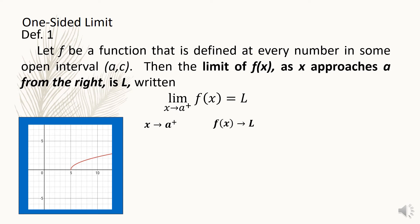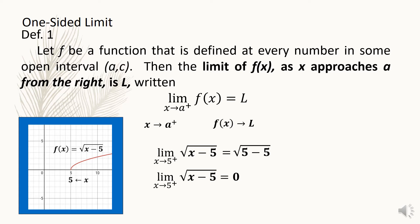Now, let us observe the graph of f of x = √(x − 5). The graph is only defined at the right side of 5. As x approaches 5 from the right, the graph is defined, but it is not defined as x approaches 5 from the left. To define the limit: the limit of √(x − 5) as x approaches 5 from the right, substitute x = 5, giving √(5 − 5), so the limit is 0.